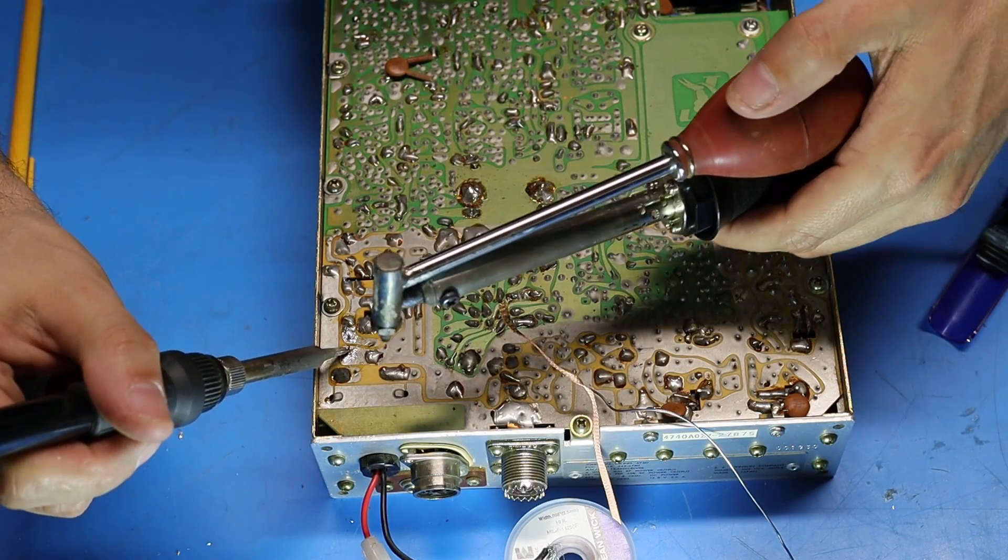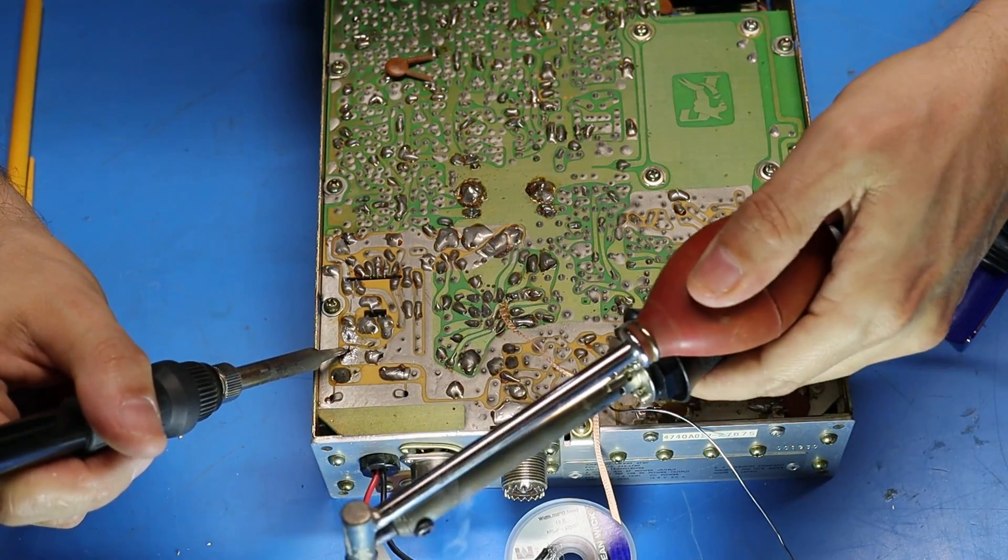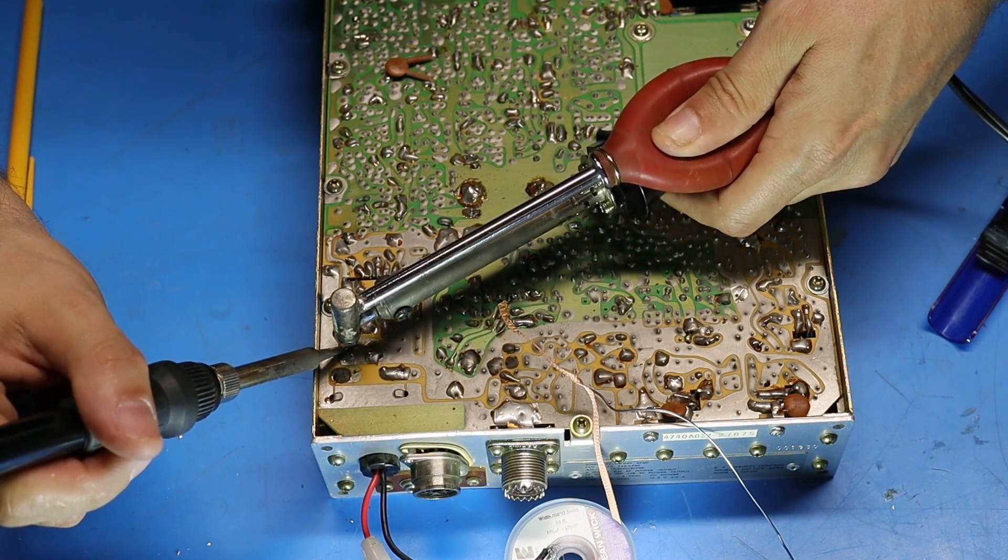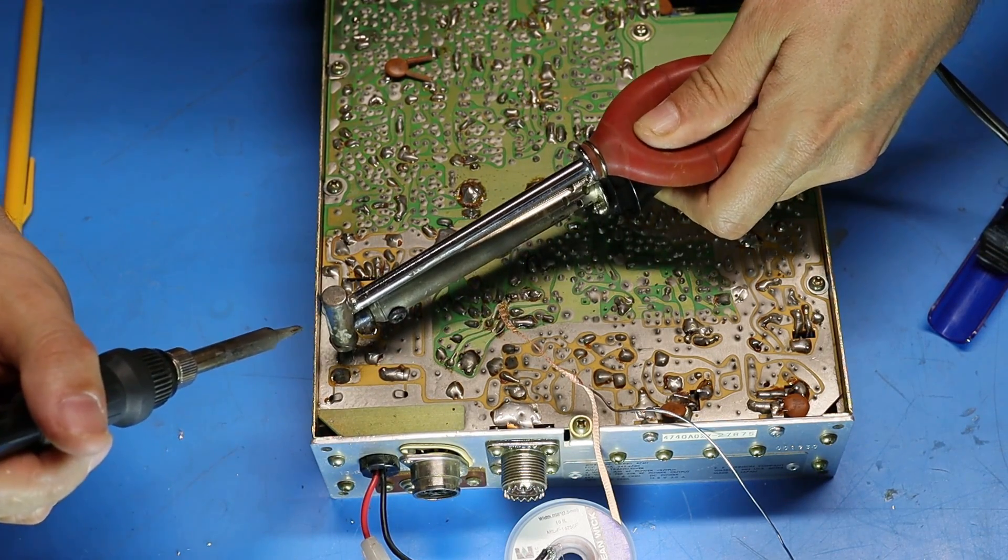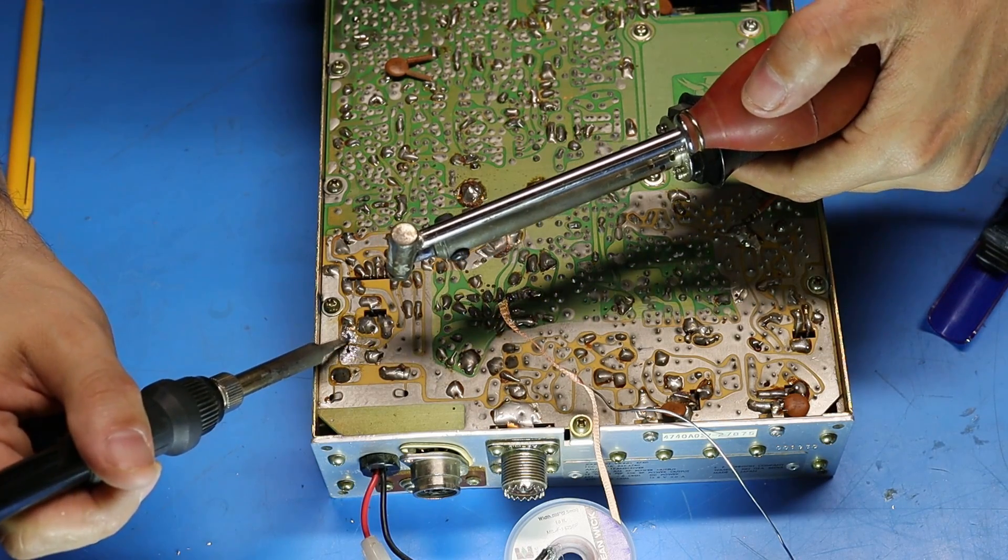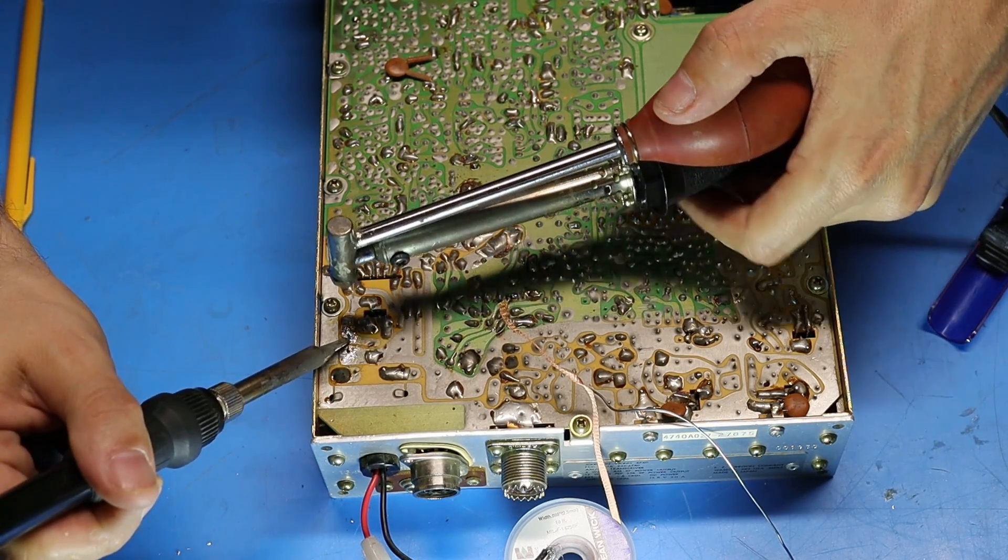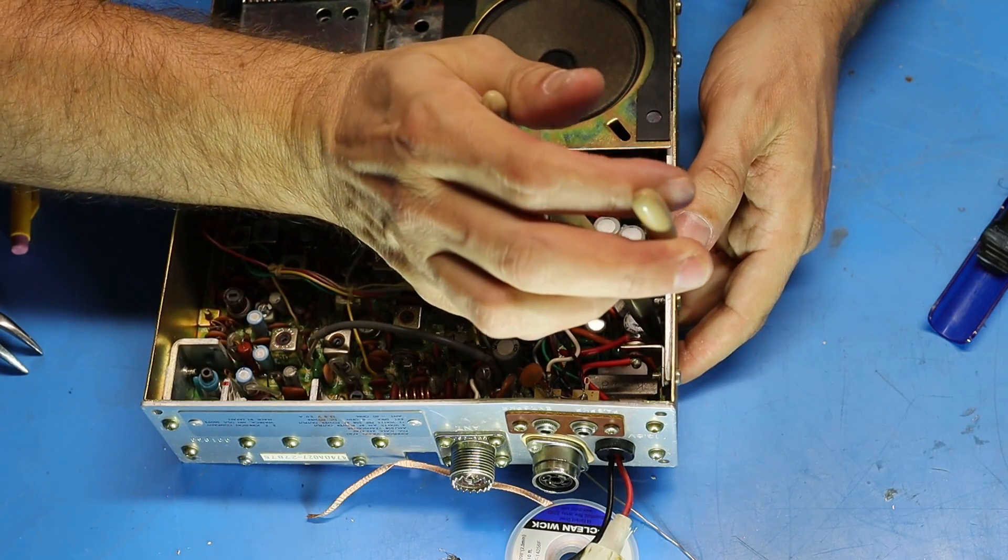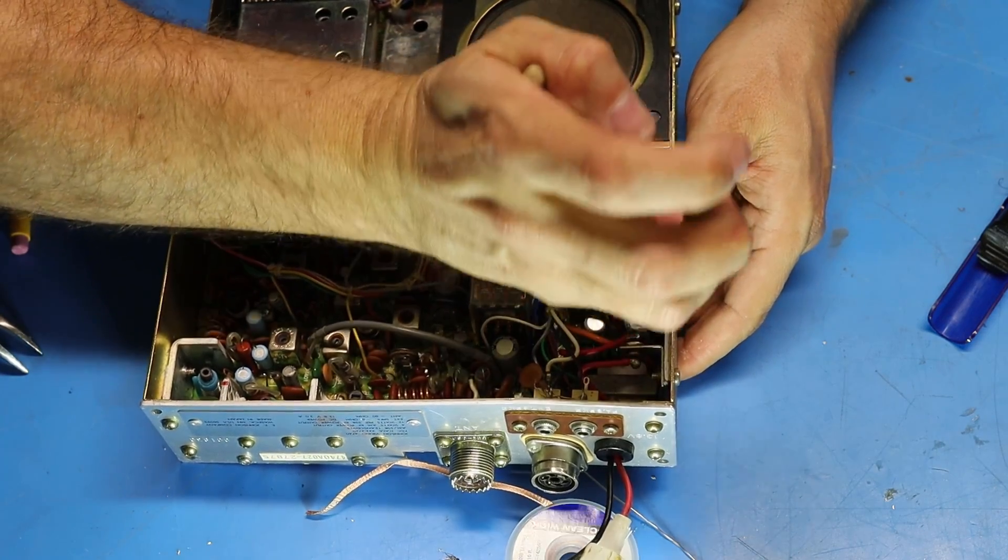Now I can also use my bulb sucker. In this case it seems like it actually worked pretty good so I may end up using this for this job. I've got all the solder off the joints. I should be able to pull this capacitor out of here.